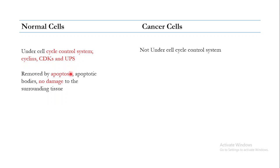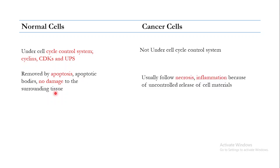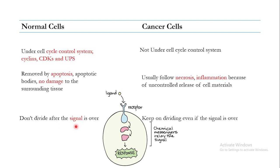Normal cells are removed by the process of apoptosis, through the formation of apoptotic bodies, causing no damage to surrounding tissue. Cancer cells usually undergo necrosis, which causes inflammation, and this inflammation is responsible for the uncontrolled release of cell materials that damage the surrounding tissue. Normal cells only divide when there is a signal.